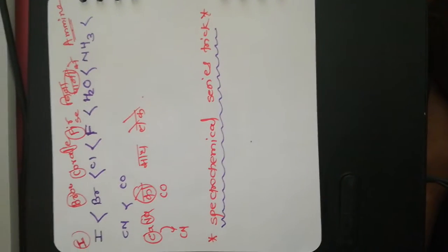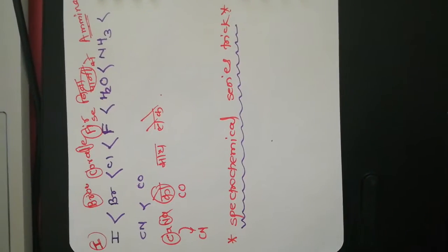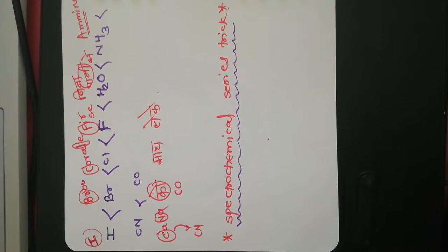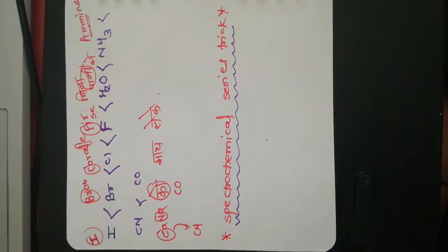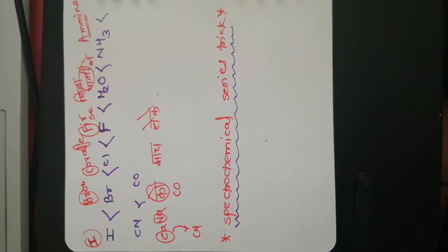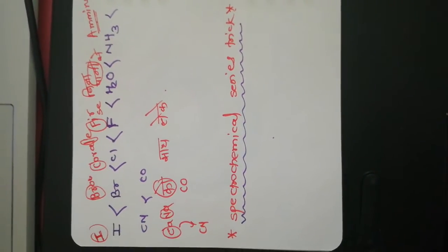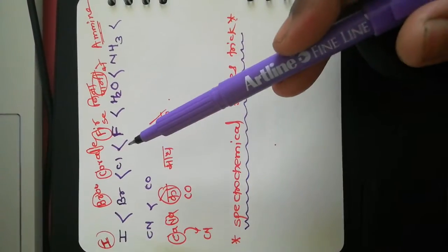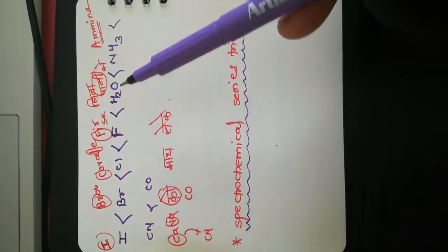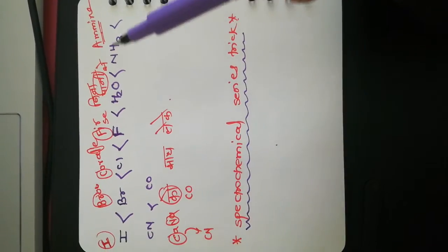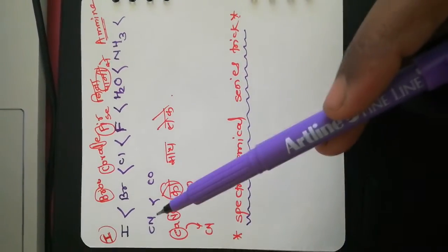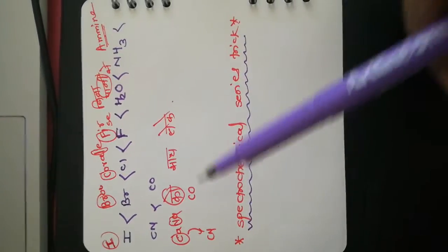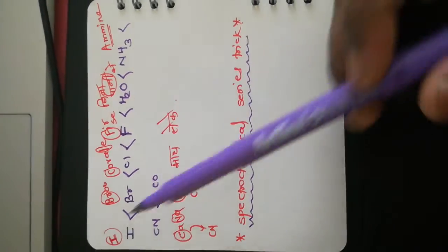Hello students, in this video I will teach you how to remember the spectrochemical series trick. The series includes: iodine, bromine, chlorine, fluorine, water, ammonia, cyanide, cobalt. How to remember these?